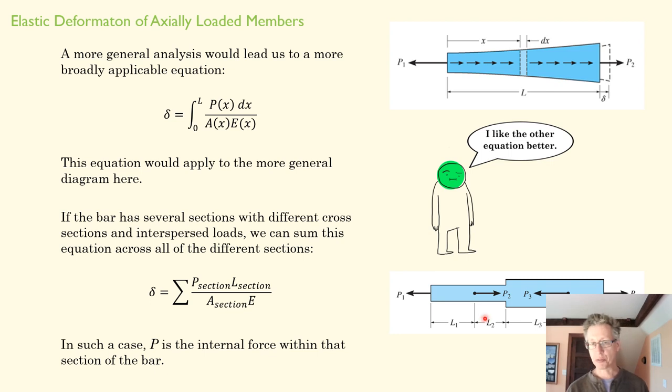And, if the bar has multiple cross-sections, like this one here, we can sum that equation or the equation, the simplified equation on the previous page, across those different sections. In other words, if I apply a force P here, each one of these sections is going to be deformed by a certain amount. And, I can simply find how far this section is deformed and add it to how far that section is deformed, and then I'll get the total deformation delta of the bar.